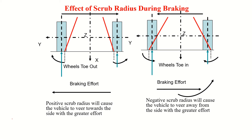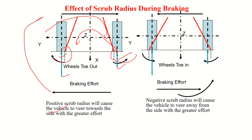Let us look at the effect of scrub radius during braking. Assume we brake a rear-wheel driven vehicle. The braking force on the right wheel may not be equal to the braking force on the left wheel. Each force about its respective pivot point creates a couple — a clockwise couple on one side and a counterclockwise couple on the other. If the clockwise couple is greater than the counterclockwise couple, the vehicle steers out in that direction. With negative scrub radius, it will steer out in the other direction — this danger is also present.